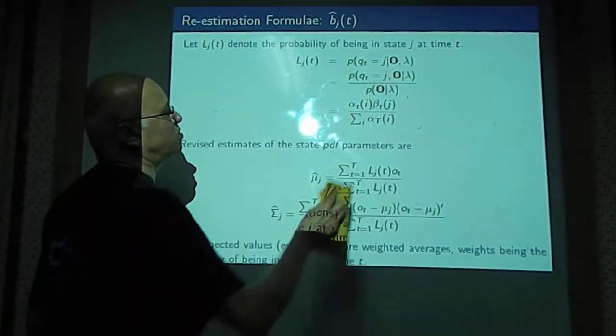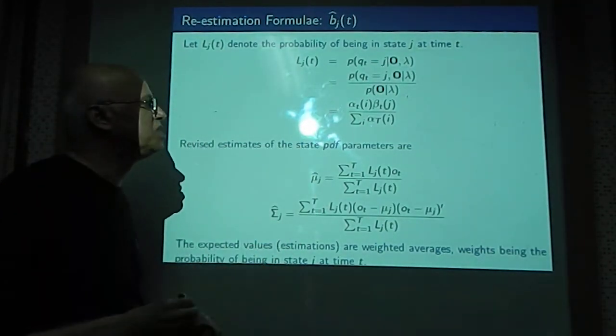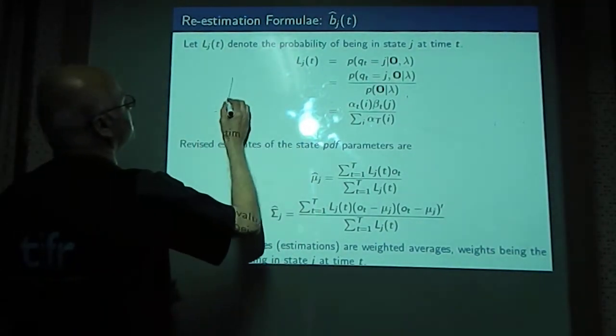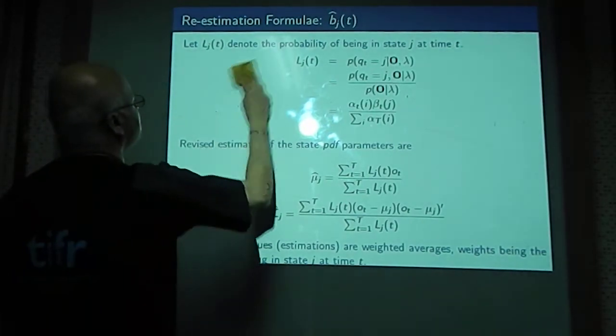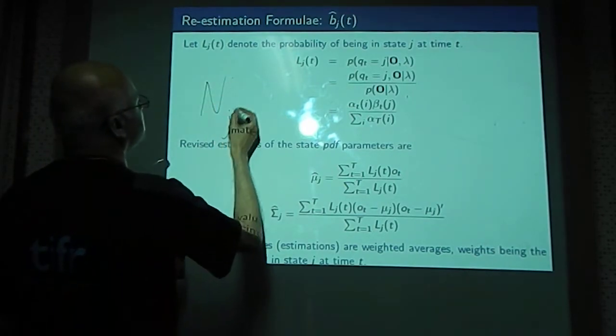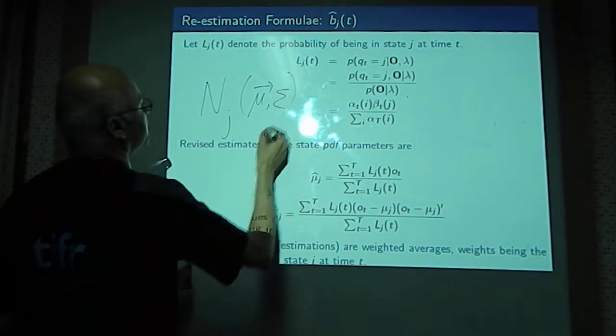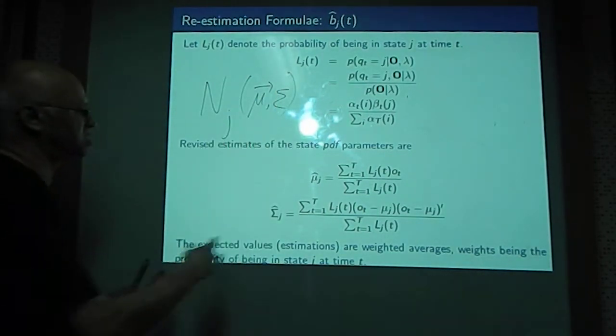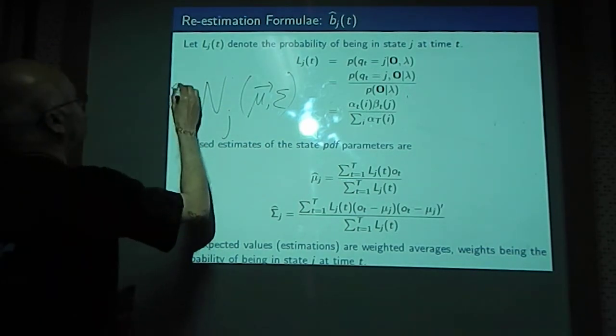Now, so what we have done is, we know now mu and covariance matrix, which means we have estimated the parameter of the state distribution associated with each of the states. For the j-th state, we know mu vector and we know the covariance matrix. We can compute it for each of the states j, which means that we already know capital D.